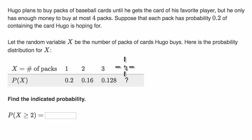Because Hugo has to stop at four, even if he doesn't get the card he wants on the fourth pack, he's just going to stop there. So we can actually figure out this question mark by realizing that these four probabilities have to add up to one. But let's first answer the question.